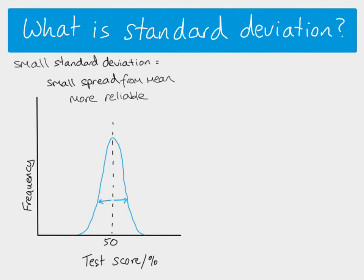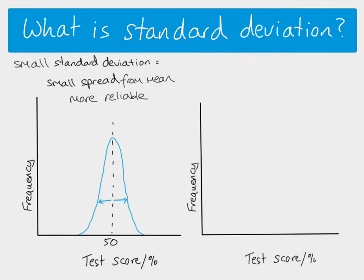If you had another class and did the same thing — you plot their test scores — this time you've got the same mean value but the test scores are much more spread, with more lower scores and more higher scores compared to the previous class. You might see something that looks like this: still a normal distribution, but you can see that the distance from the mean is greater here.